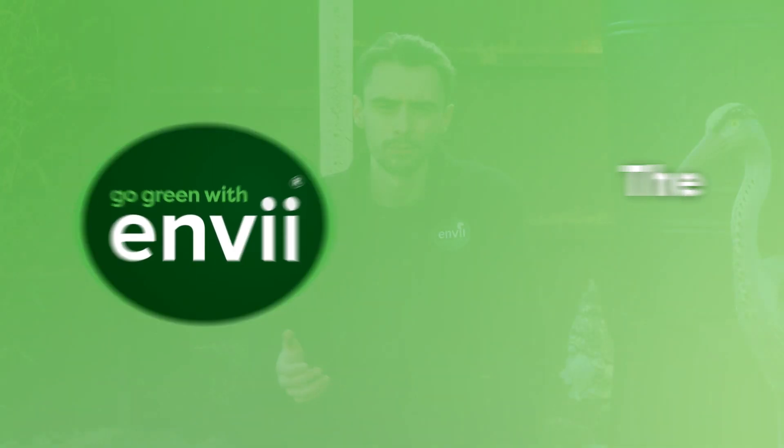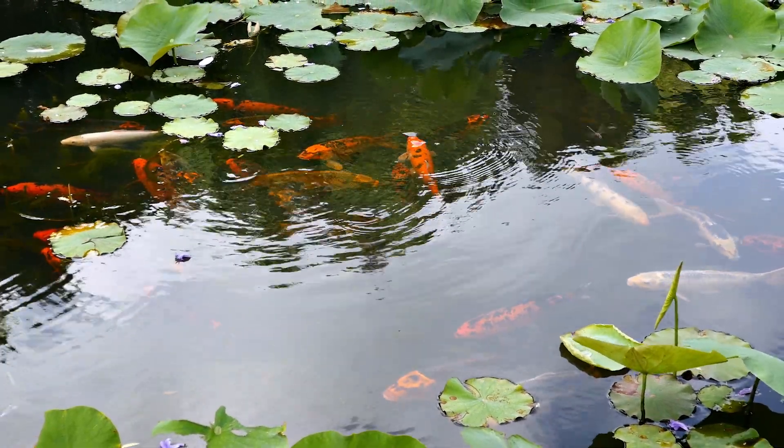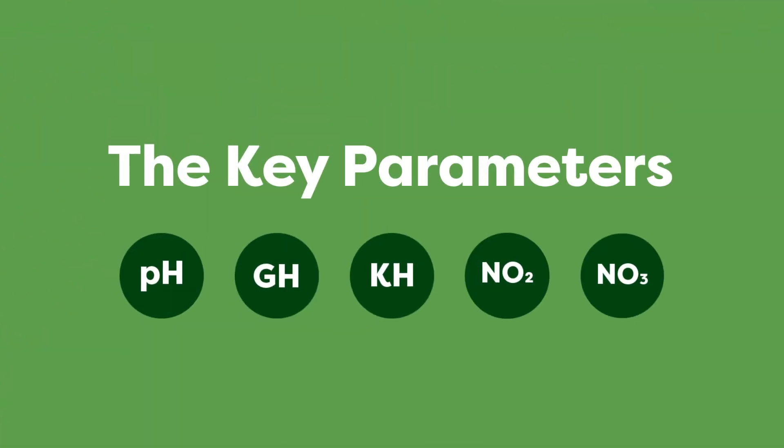When you first start looking after a pond, the parameters side of things can be quite daunting — you might not have even heard of pond parameters. It can get quite technical, but really once you get your head around it, it's quite straightforward. It is one of the most important factors to a successful pond. So there are five key parameters we're going to look at today, and some additional ones worth looking into as well. The first one, and arguably the most important, is pH.